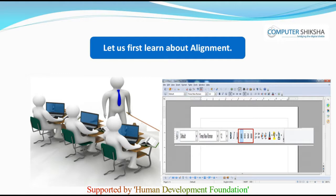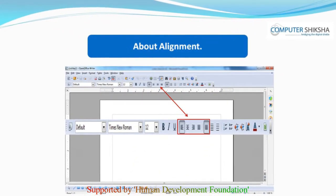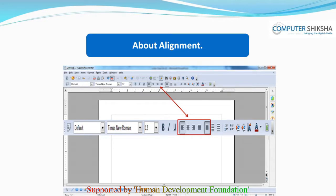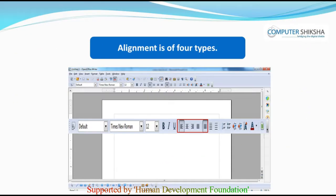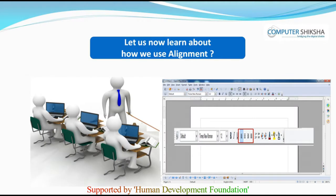Let us first learn about alignment. Alignment is an important part of formatting using which we can set our text or paragraph according to our requirements. We can set the place from where we want to begin typing our text on the page using alignment — whether you want your text to come on the left side, the right side, or in the center of the page. Alignment is of four types: left alignment, right alignment, center alignment, and justify alignment.